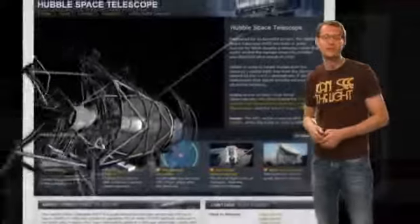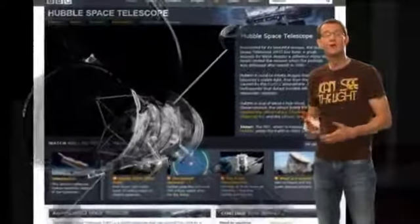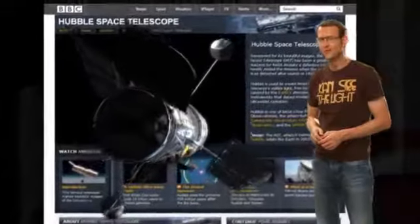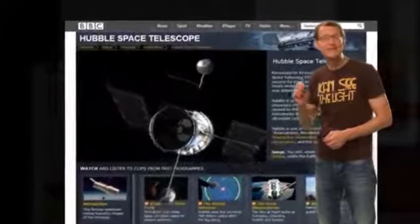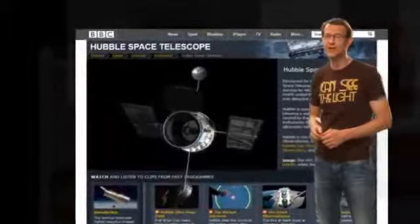Hubble has a couple of instruments on board that do this kind of science. They function a lot like high-tech versions of a prism, except they work even on the faintest of galaxies and can take extremely precise measurements of brightness.